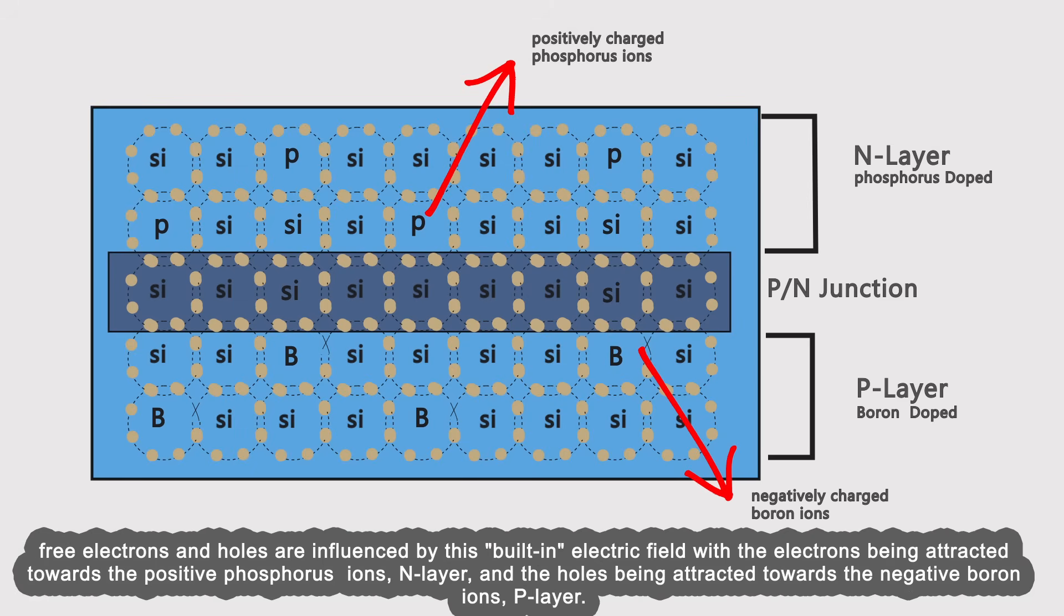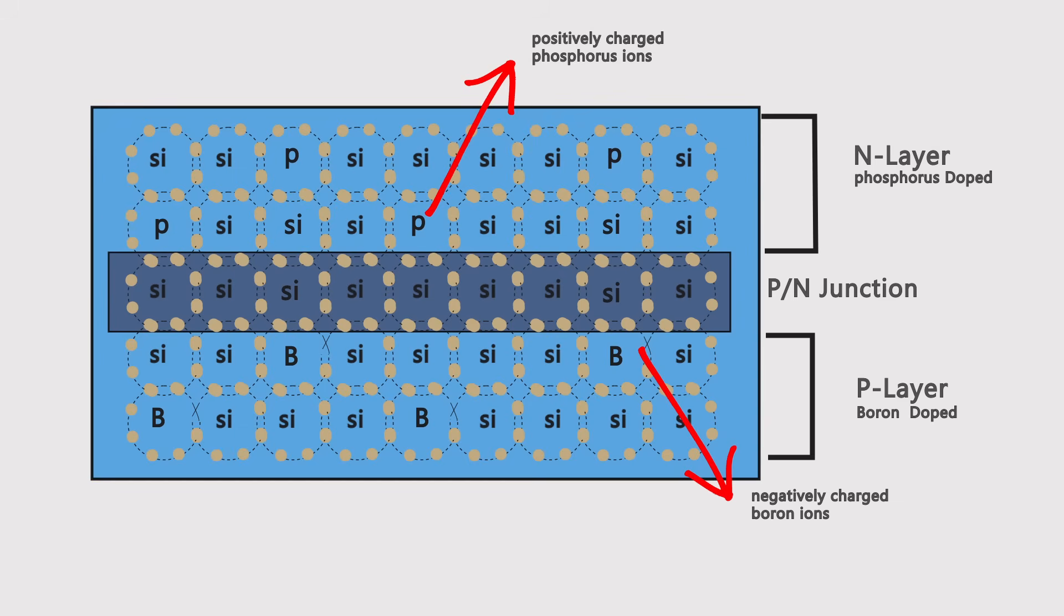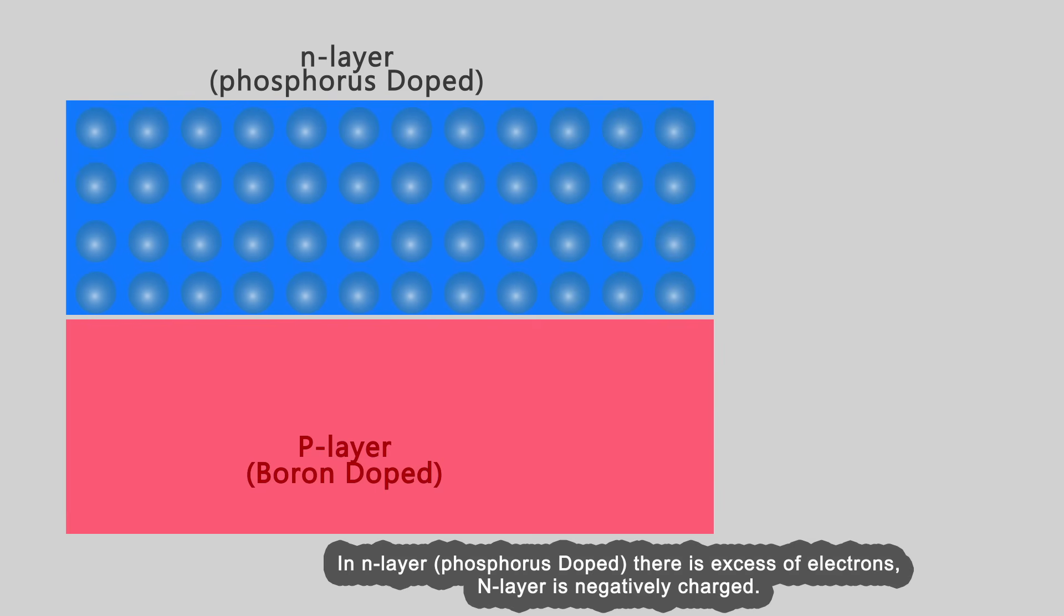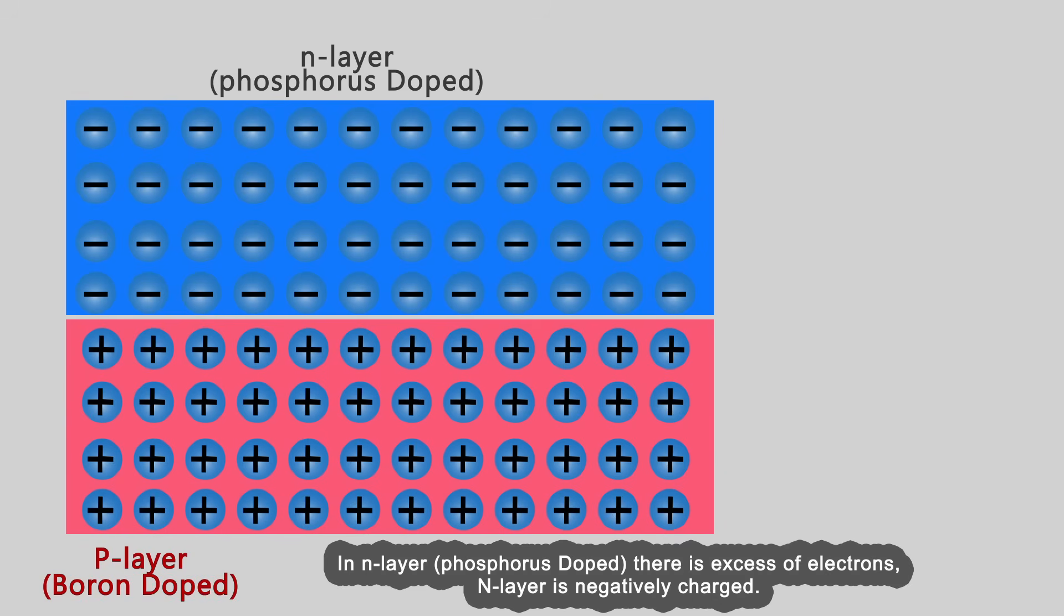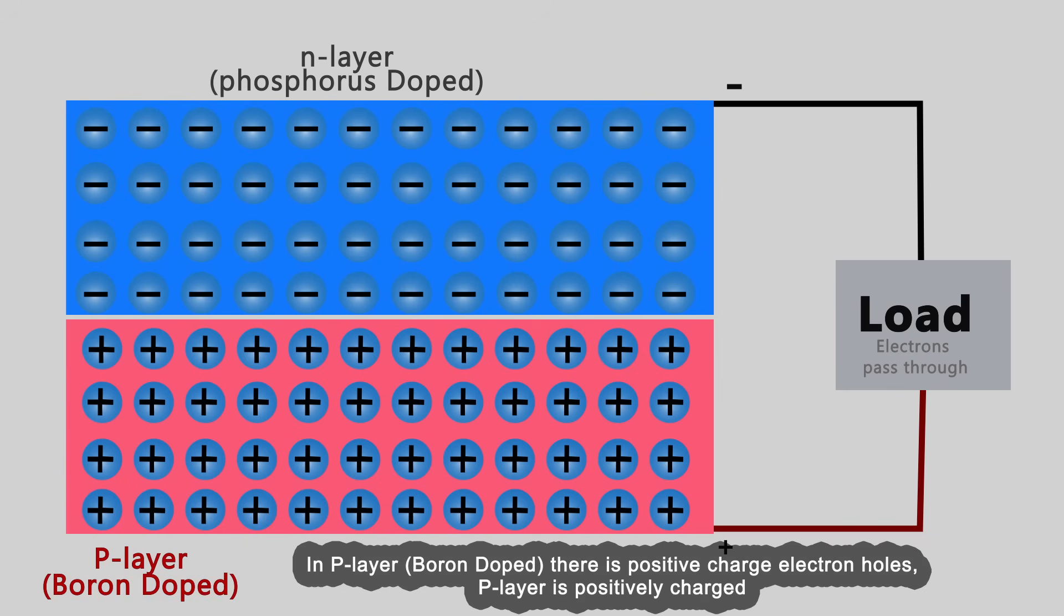Free electrons and holes are influenced by this built-in electric field, with electrons being attracted towards the positive phosphorus ions in the n-layer and holes being attracted towards the negative boron ions in the p-layer. To summarize: in the n-layer (phosphorus doped), there is excess of electrons—the n-layer is negatively charged. In the p-layer (boron doped), there are positive charge electron holes—the p-layer is positively charged.